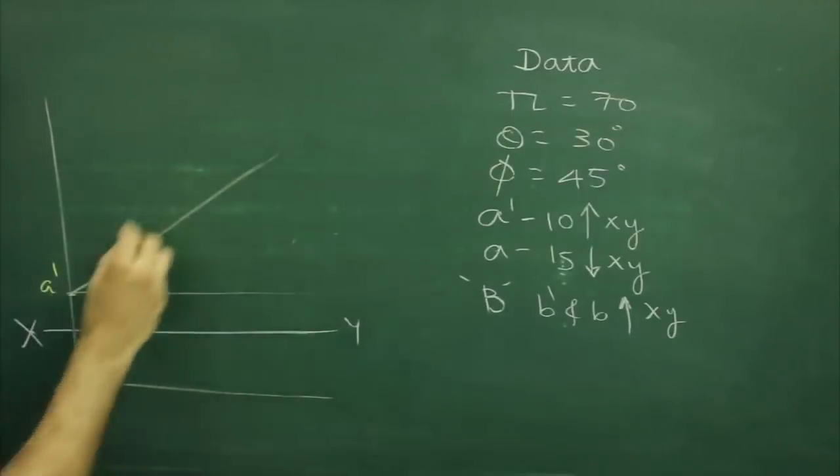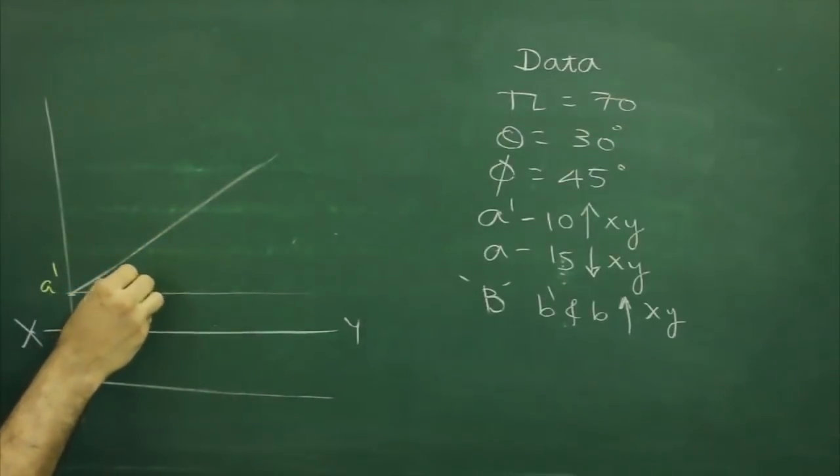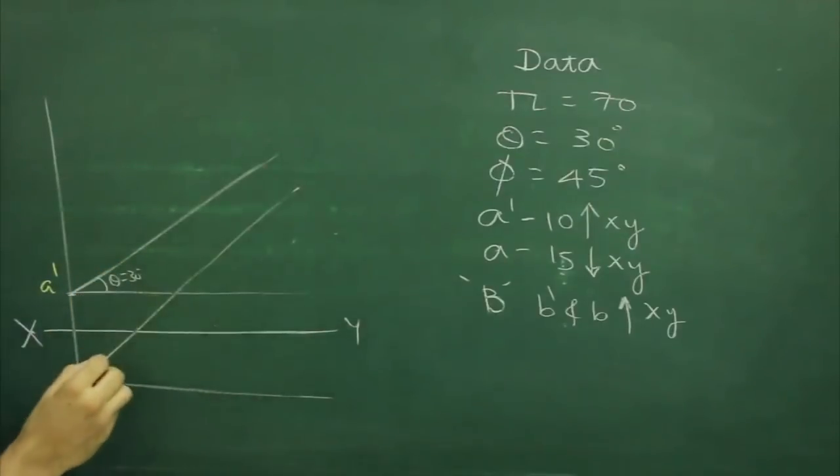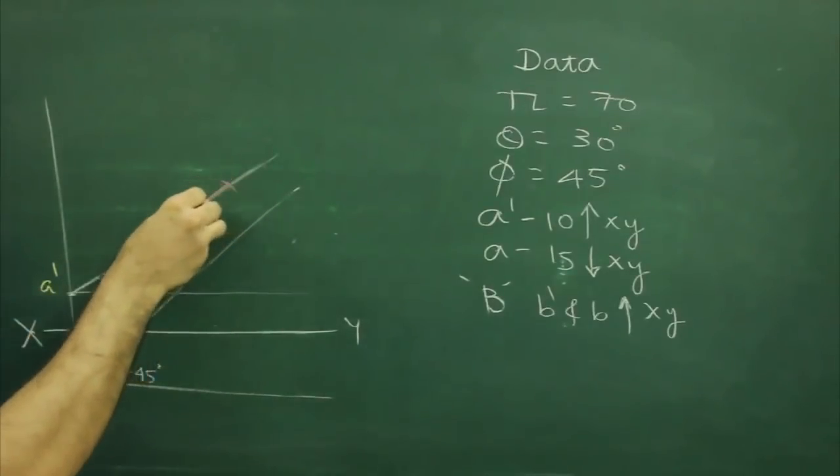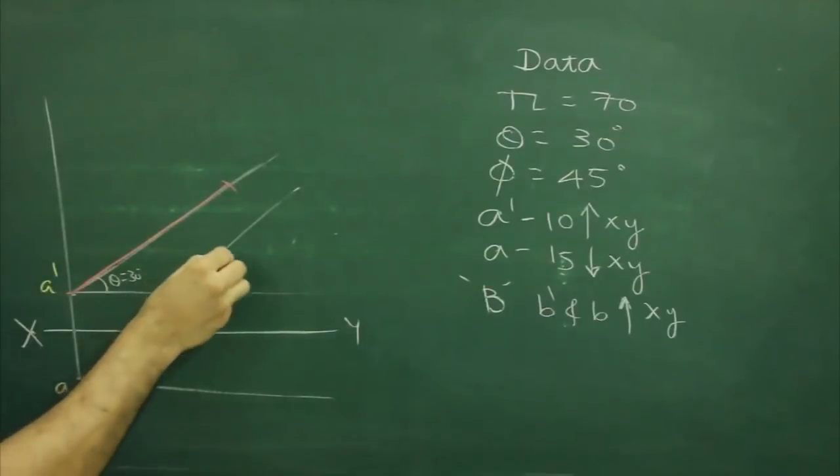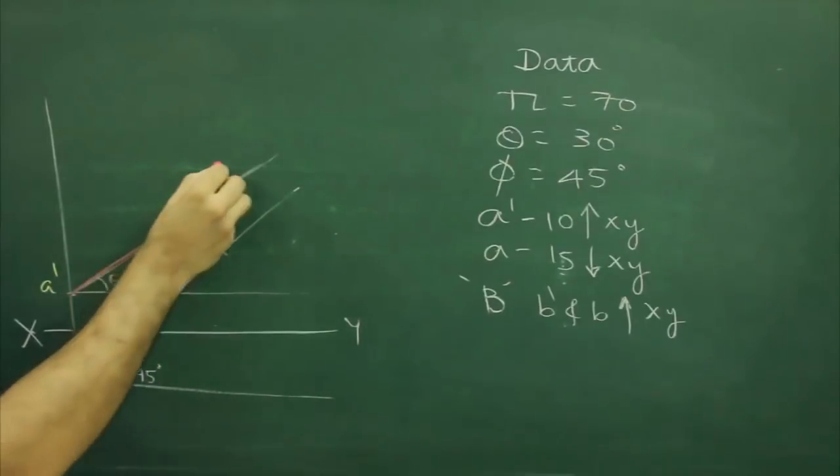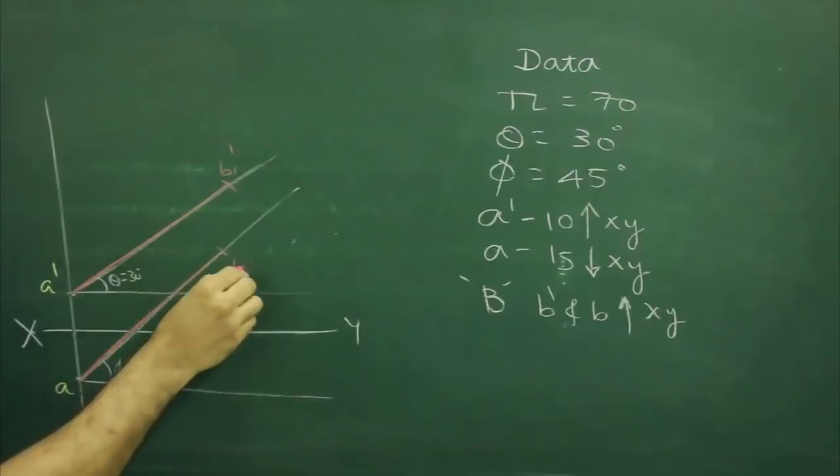So we draw angle theta which is at 30 degree, which is 30 degree and 45 degree phi. We have true length, so we can cut from a dash. This point would be b1 dash and this is b2.